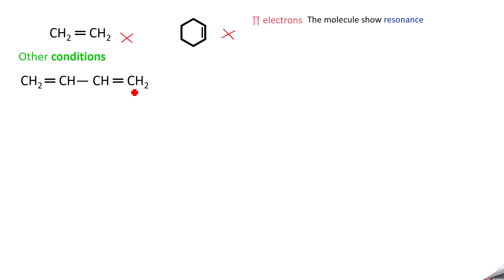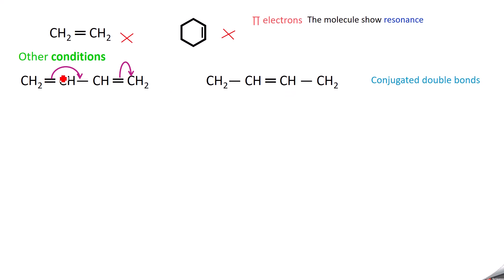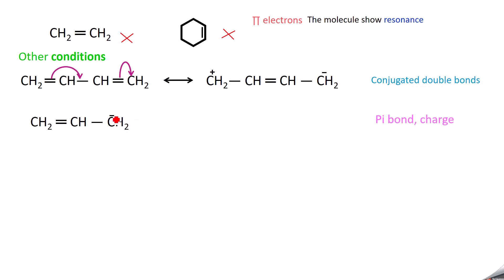For example, consider a compound with conjugated double bonds — alternating double bonds. If you shift the pi bond, the double bond becomes single bond, single bond becomes double bond, and so on, and certain carbons acquire positive or negative charges. This is a resonance structure of this compound, represented by a double-headed arrow. Another case: if you have a pi bond with a negative charge, shifting the charge and the pi bond gives you a new resonance structure with a negative charge on a different carbon.